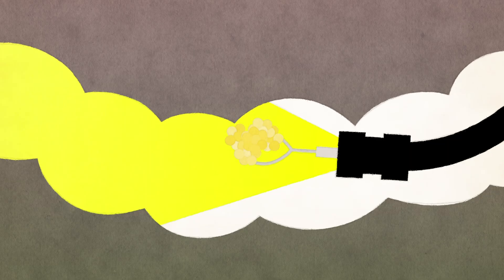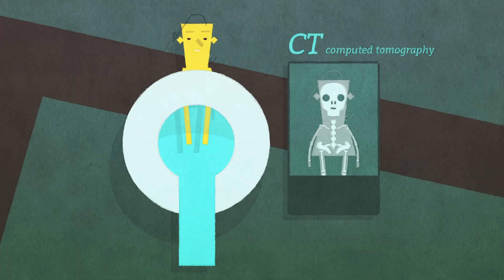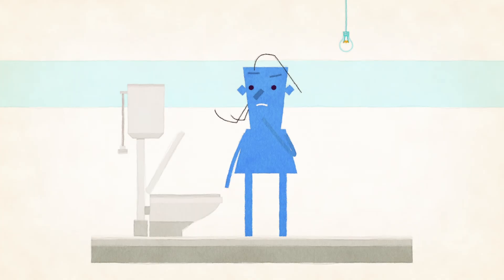Colonoscopy is the only test that can be used to both find and remove polyps. There are, however, other useful screening tests, including imaging and at-home tests that can allow patients to examine their stool for small amounts of blood.